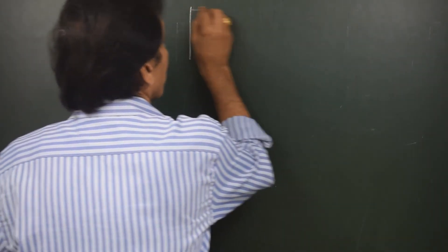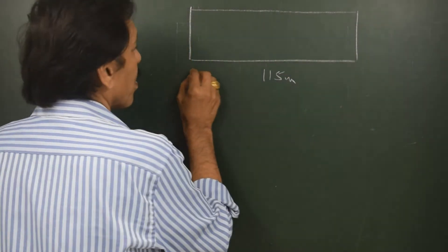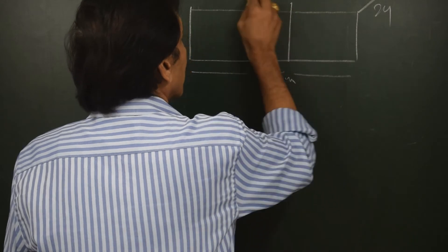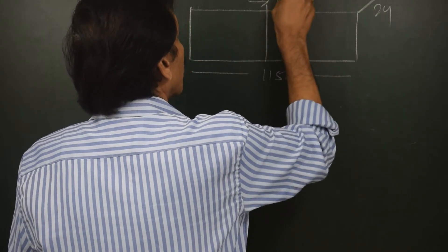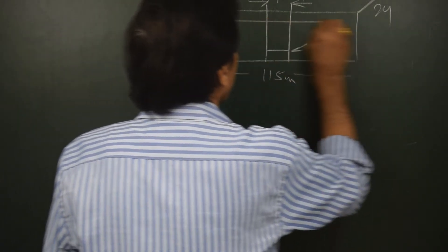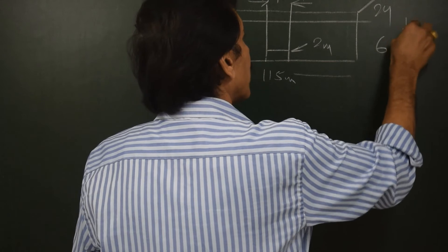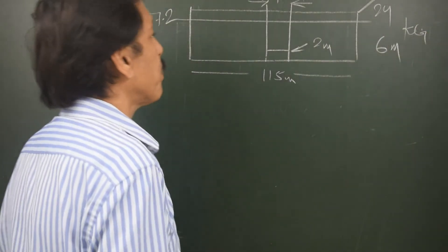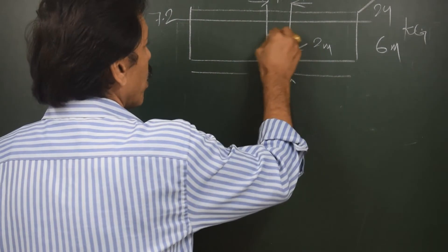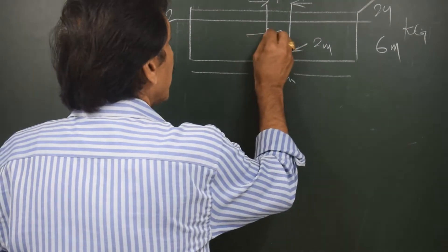Consider a ship 115 meters long and 24 meters wide, with a midship compartment of 14 meters. There is a double bottom to a height of 2 meters. The initial draft is 7.2 meters and the initial KG is 6 meters — KG will not change. The damage has occurred below the waterline and above the double bottom flat, with permeability 80%.